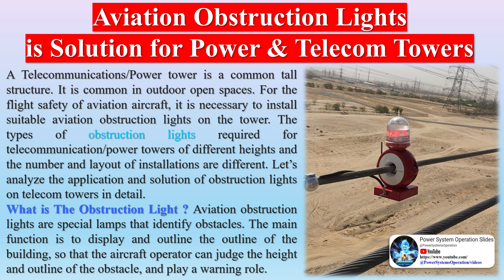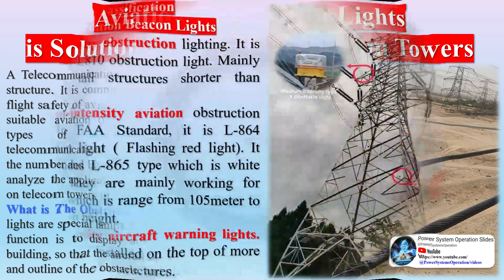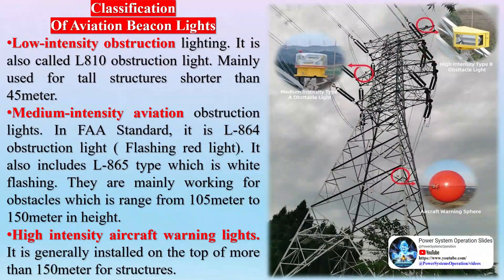Aviation lamps deliver constant illumination, sometimes with high-intensity off-cycles for a few seconds. Types include red beacons, red strobes, high-intensity white lights, and medium-intensity strobe lights.